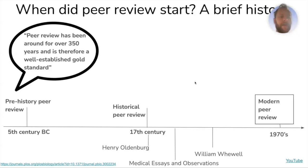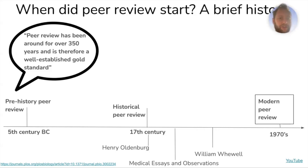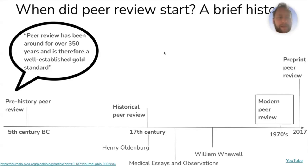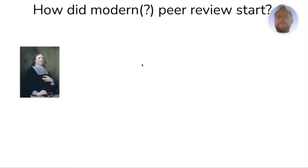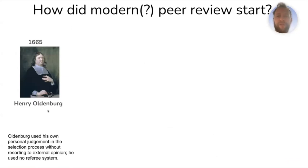Modern peer review — where you send your paper to independent referees who review it and send those reviews back — did not start happening on a regular basis until the 1970s. Einstein famously had a paper sent out for peer review and was very unhappy, so he pulled the article and published elsewhere. The DNA double helix paper by Watson and Crick was not peer reviewed — they sent it to Nature because Nature would publish their work more quickly than any other journal. Preprint peer review started around 2016-17, though arguably it has been happening longer than that.